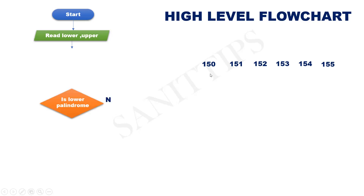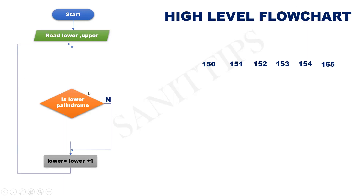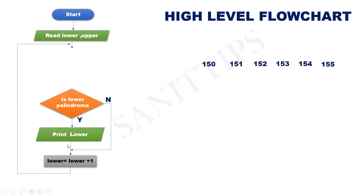Here it is no, the condition is no, then we need to go to the next number. So lower is equal to lower plus 1. Again we have to check — now in lower it is 151. Check whether lower is palindrome or not. In this case it is yes, so we print that number — print lower. Then go to the next number 152. 152 is not palindrome, hence we need to go to the next number. Lower is equal to lower plus 1.